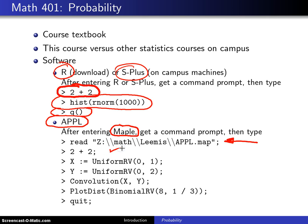Then you should try 2 plus 2, that'll give you 4. You should try setting X to a uniform(0,1) random variable, Y to a uniform(0,2) random variable, and then invoke the convolution routine. That convolution routine will find the sum of X and Y. To do a little bit of graphics, you can plot the distribution of a binomial random variable with N equals 8 and P equals one-third. Finally, quit will get you out of Maple. You should try both of those early on to make sure you have access to both pieces of that software.